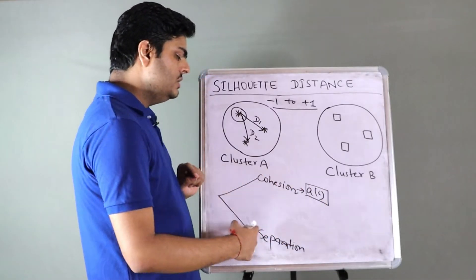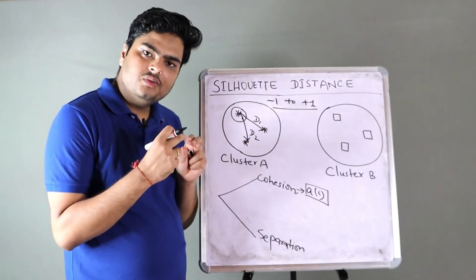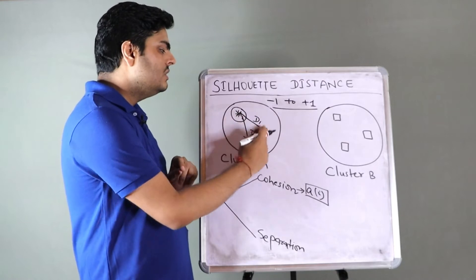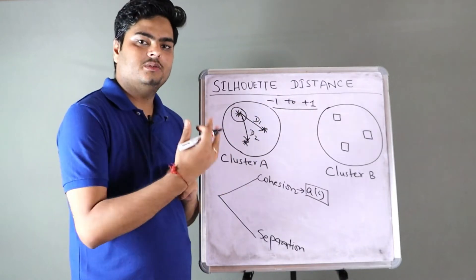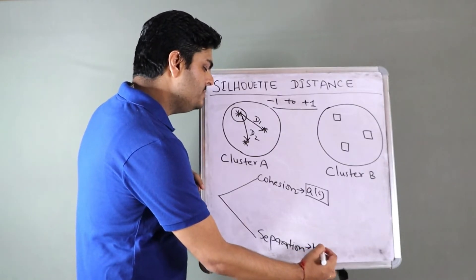Let us understand how to compute for one data point. There is a variable called A to compute cohesion. A for a data point I. For example, this data point I'm considering as I.